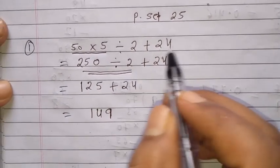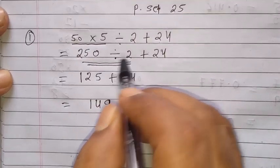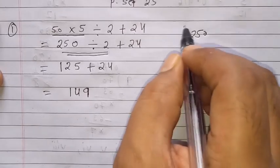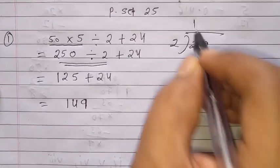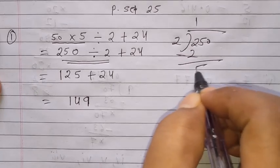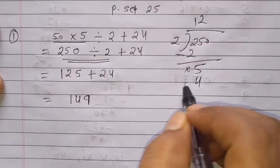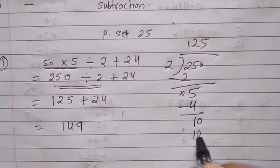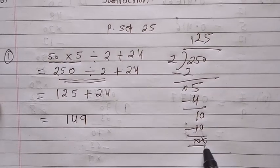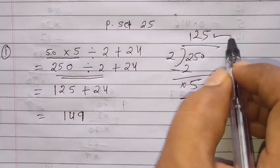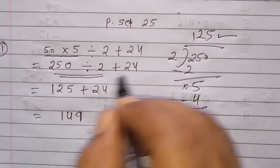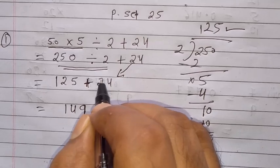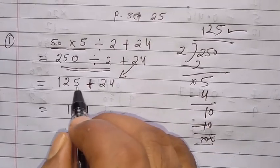Now according to the rule, we solve division next. 250 divided by 2: 2 × 1 = 2, bring down 5, 2 × 2 = 4, 5 minus 4 = 1, bring down 0, 2 × 5 = 10. So we get 125. Now 125 plus 24: 5 + 4 = 9, 2 + 2 = 4, the answer is 149.